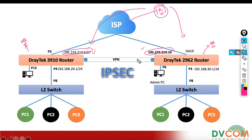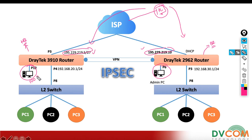For my lab purpose I just want to enable this. To configure the 3910 router I need to connect my PC on the management interface. Port 12 is configured as a management interface — you can understand why from my previous videos. On the 2962, port number 6 is configured for management, with network 100.0 on the 3910 side and 200.0 on the 2962 side.